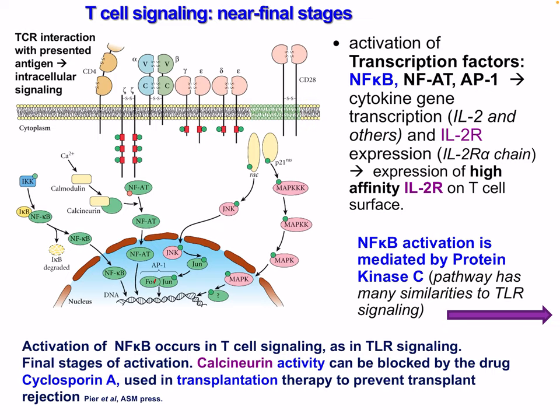T cell interaction with presented antigen through intracellular signaling activates transcription factors including NF-κB, NFAT, and AP1, resulting in cytokine gene transcription, including IL-2 and others, as well as IL-2 receptor expression including the IL-2 receptor alpha chain. This results in increased expression of the high-affinity IL-2 receptor on the T cell surface. NF-κB activation is mediated by protein kinase C, and this pathway has many similarities to TLR signaling.